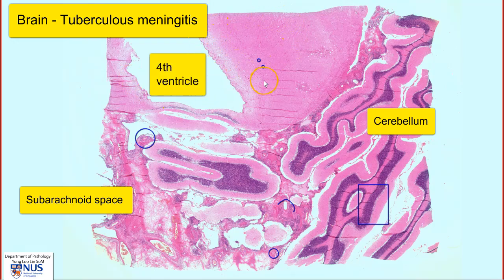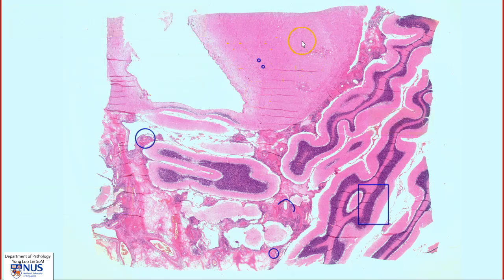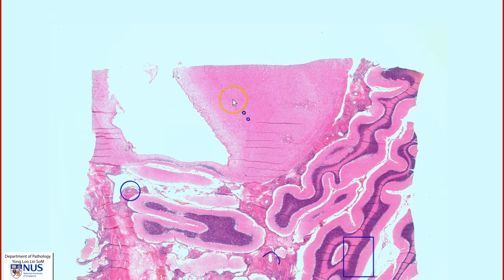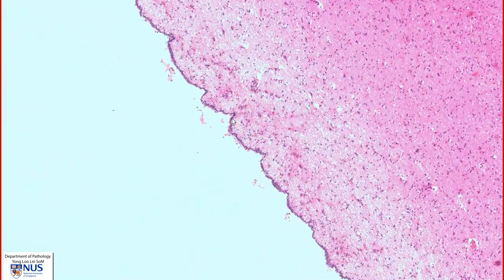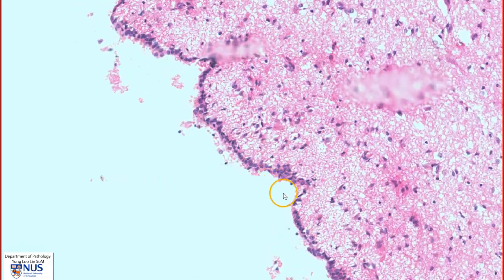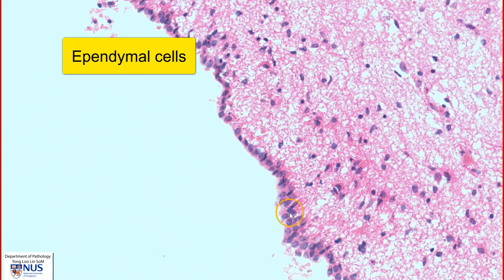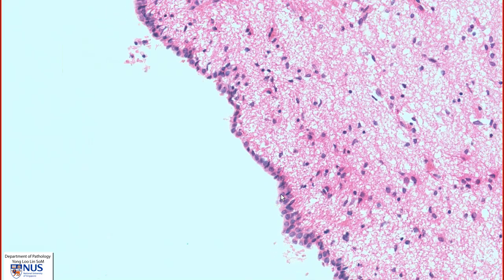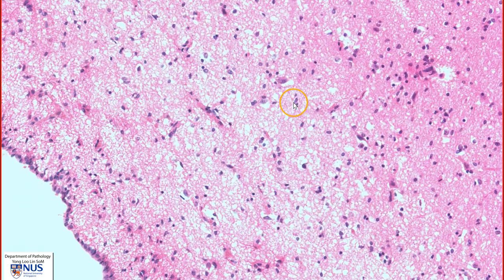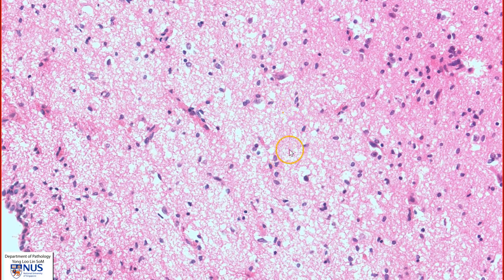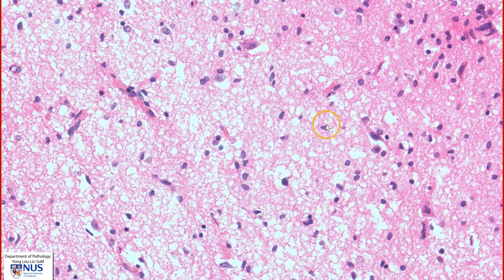Over here we have some white matter and gray matter just around the fourth ventricle. Let's do a very quick recap of normal histology first, starting with the fourth ventricle. We can see that the ventricle is lined by a single layer of cuboidal to low columnar epithelium — these are ependymal cells. Adjacent to this, we can see the white matter, which is predominantly composed of glial cells including astrocytes, as we can see here with the small round to oval nuclei.